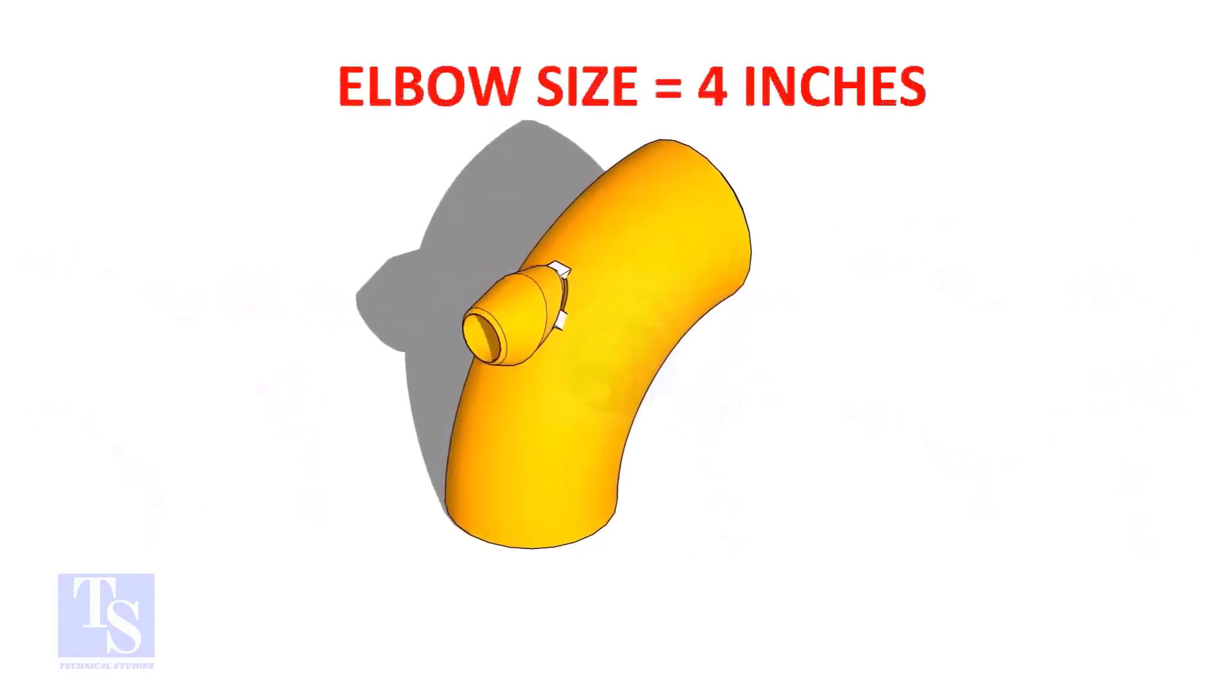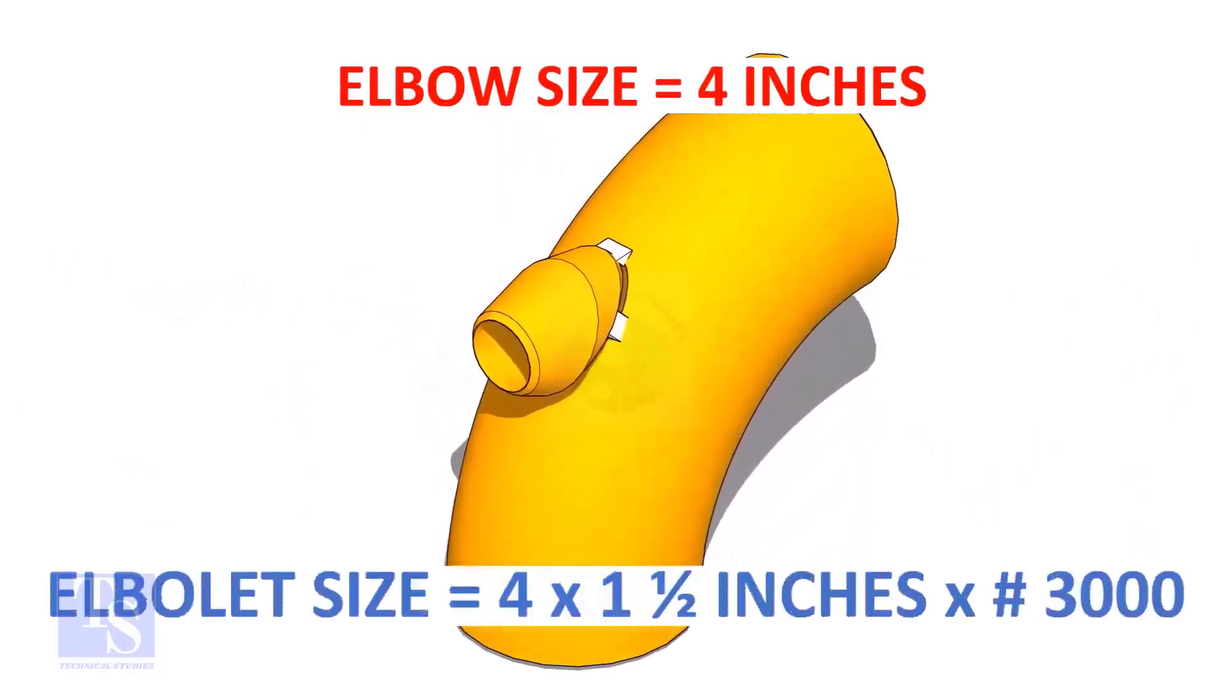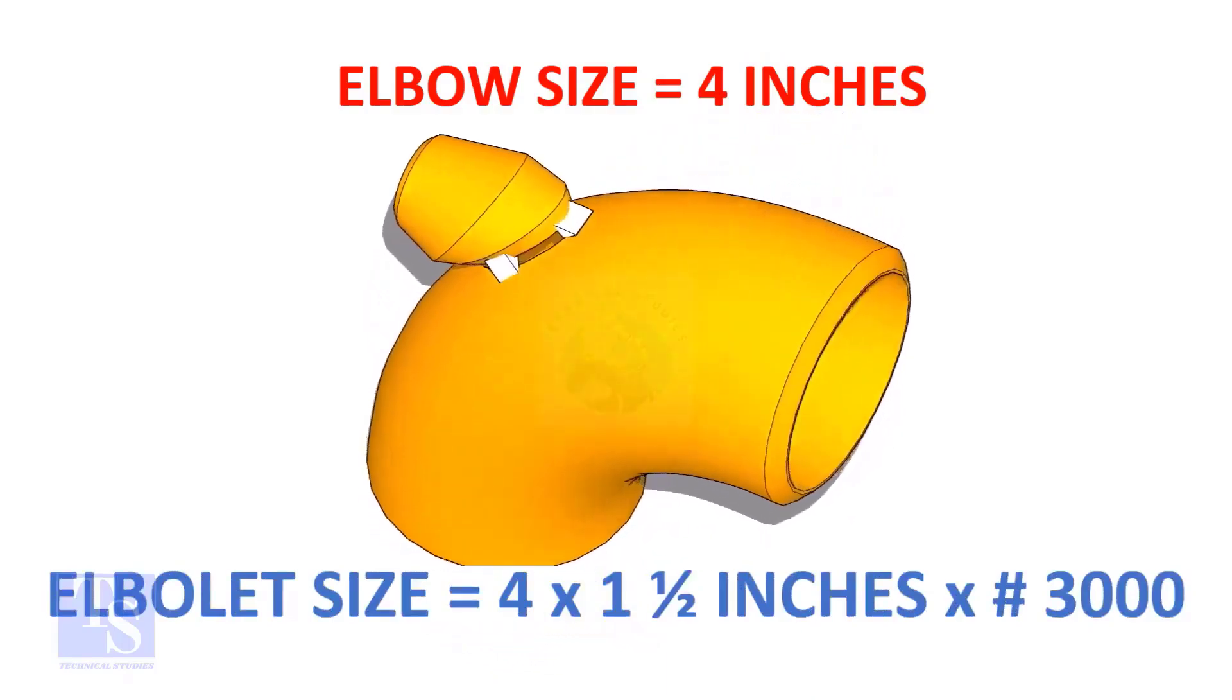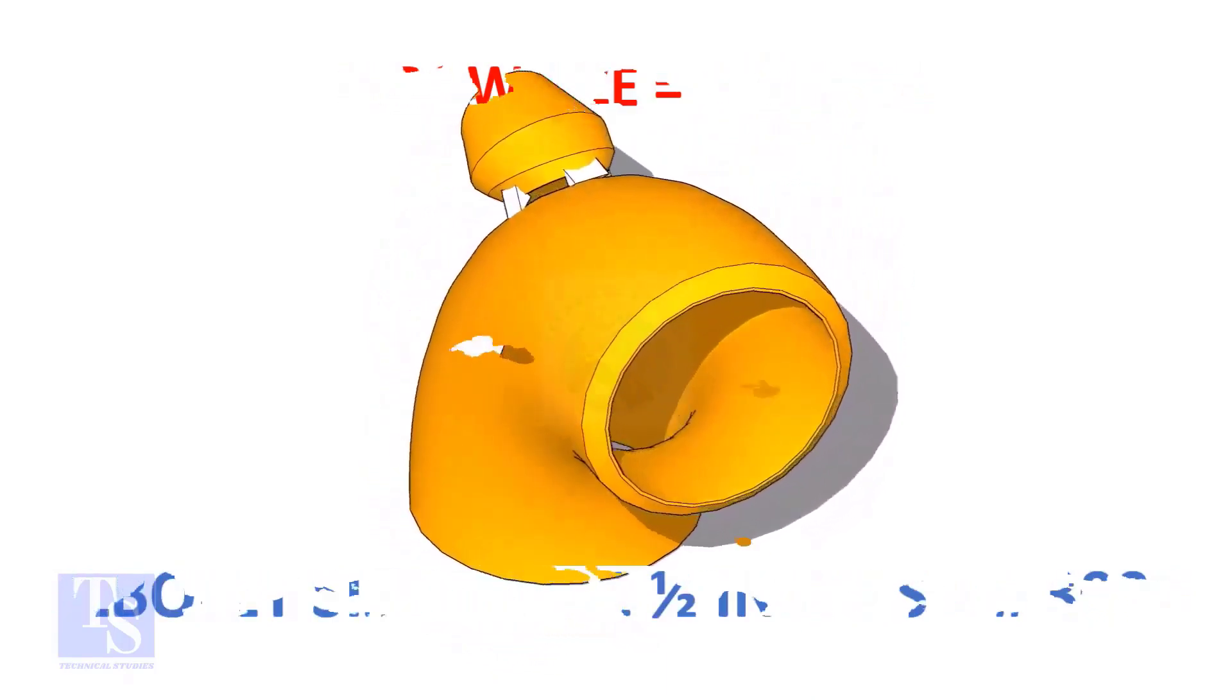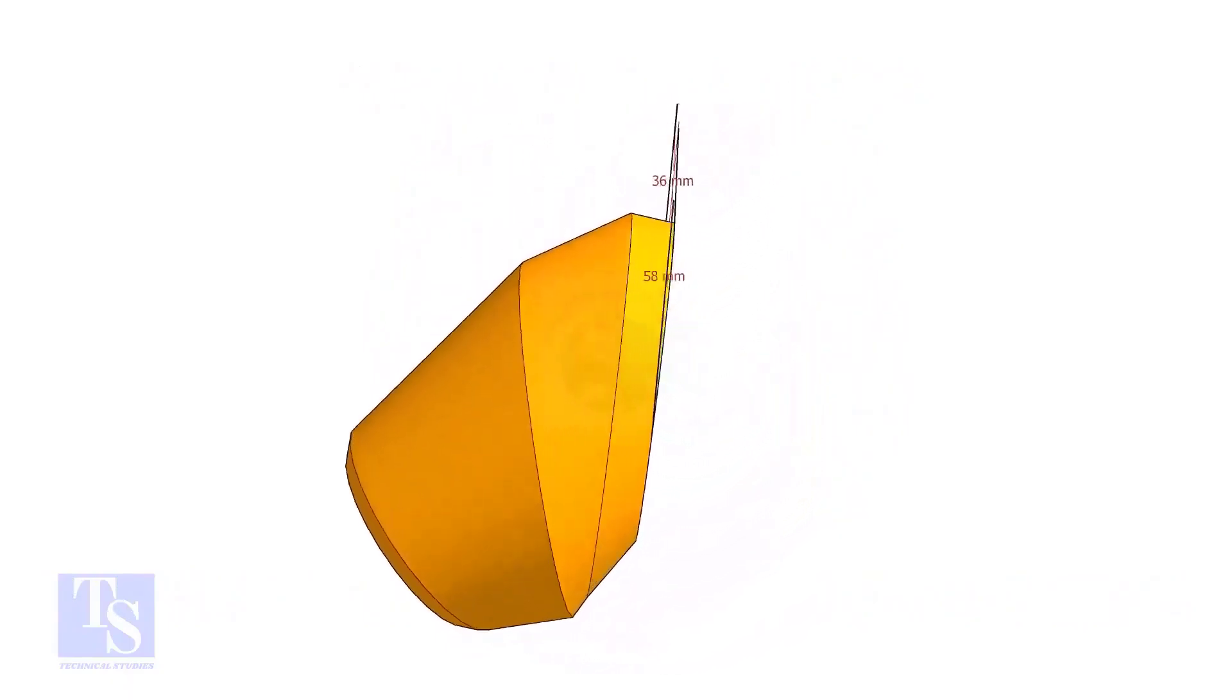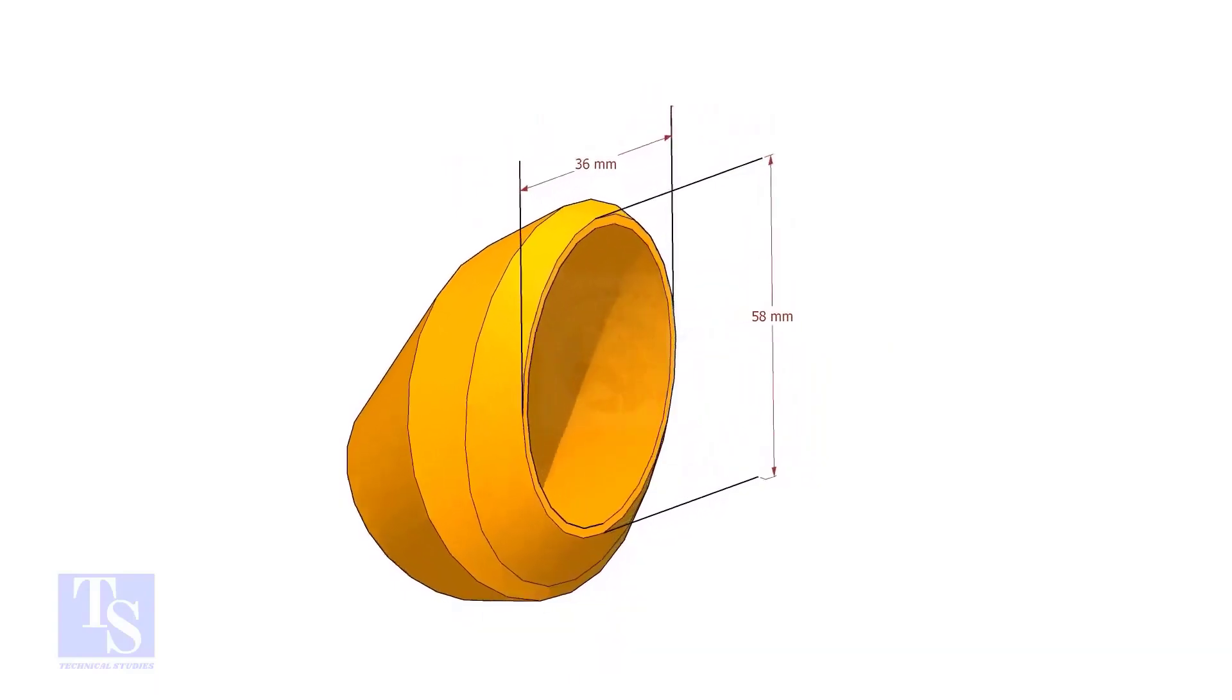The size of our elbow is four inch. The size and rating of the elbowlet is one and a half inch and three thousand pounds respectively. The bottom opening size of the elbowlet is 36mm into 58mm. Please note down these dimensions.